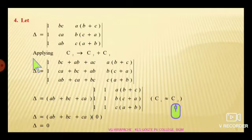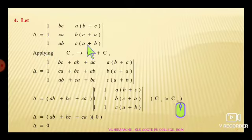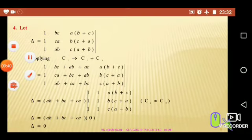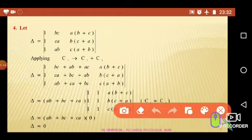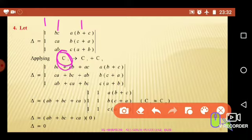Let me take the next question. Prove that the determinant with first row elements 1, bc, a(b+c); second row elements 1, ca, b(c+a); third row elements 1, ab, c(a+b) is also equal to zero. Let me begin with the given delta: first column elements 1, 1, 1; second column elements bc, ca, ab; third column elements a(b+c), b(c+a), c(a+b). Now let me apply c2 changes to c2 plus corresponding elements of c3.